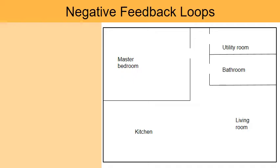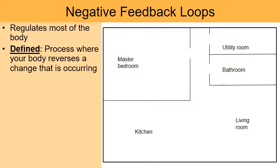Let's start talking about the feedback loops that exist to maintain our homeostatic levels. First, negative feedback — this is what regulates most of the body. In this process, your body will reverse when a change is occurring. Before we go into biology examples, here's a simple analogy of negative feedback in your home. Here's a blueprint of someone's home, and maybe tucked away in the utility room is the furnace, and mounted on the wall is the thermostat.